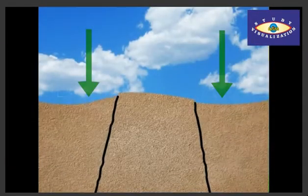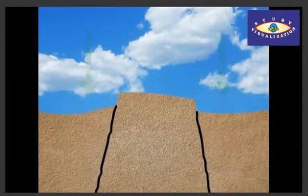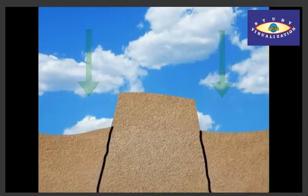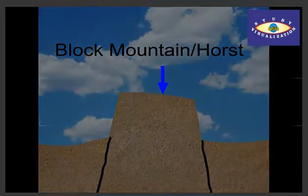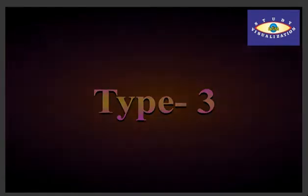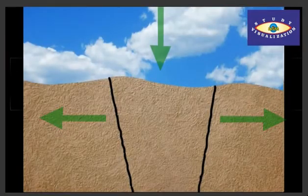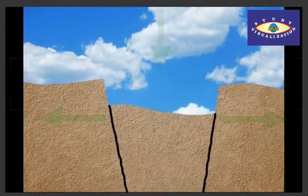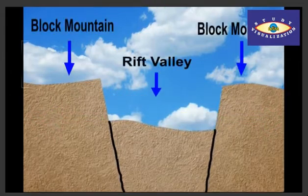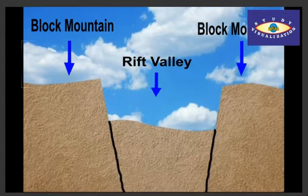Two side blocks can move downwards while the middle block remains in the same position, forming a horst or block mountain. The middle block between parallel faults can move downwards and form a rift valley, whereas the side blocks remaining in the same position can also form a block mountain.